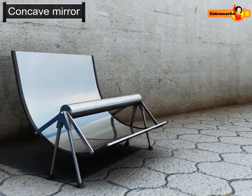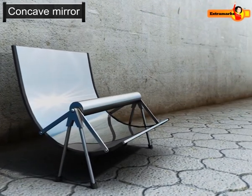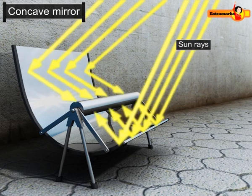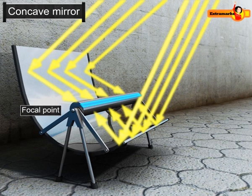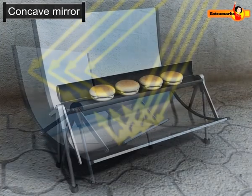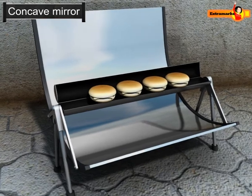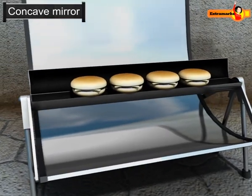When rays from the sun hit the solar furnace, they get reflected at the focal point of the solar furnace. These focused rays are then used by solar devices for heating purposes.